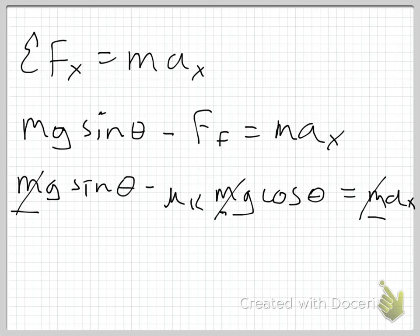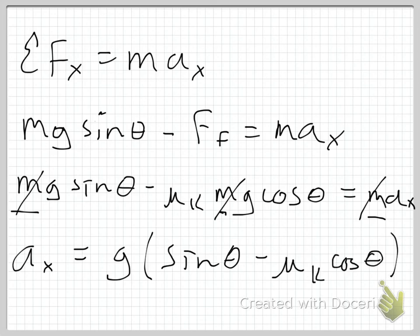And as it turns out, they do. And once they do, I've actually got the equation solved for a sub x. Let me rewrite it a little cleaner. a sub x is equal to g, the acceleration due to gravity. I'm going to factor that out, times sine of theta minus mu k cosine of theta.